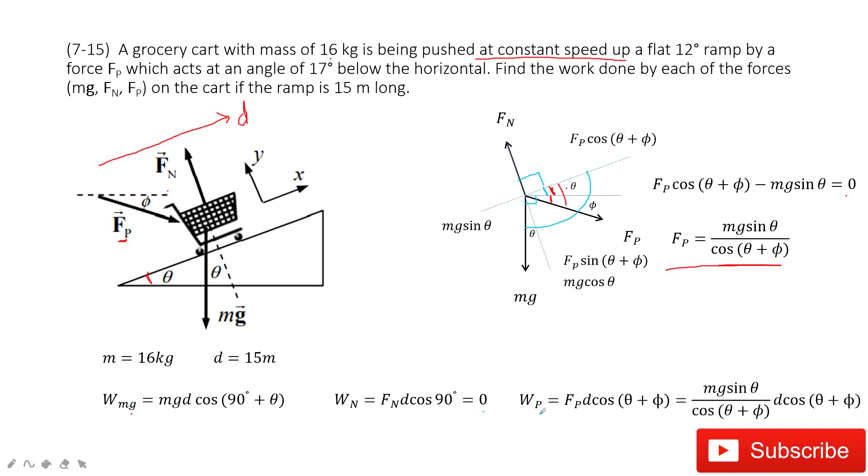Next, find the work by the person. We can see the work by the person - this is Fp. Let's change the color. This is Fp and this is the displacement. The angle between them is θ plus φ. So Fp times d times cos(θ + φ).